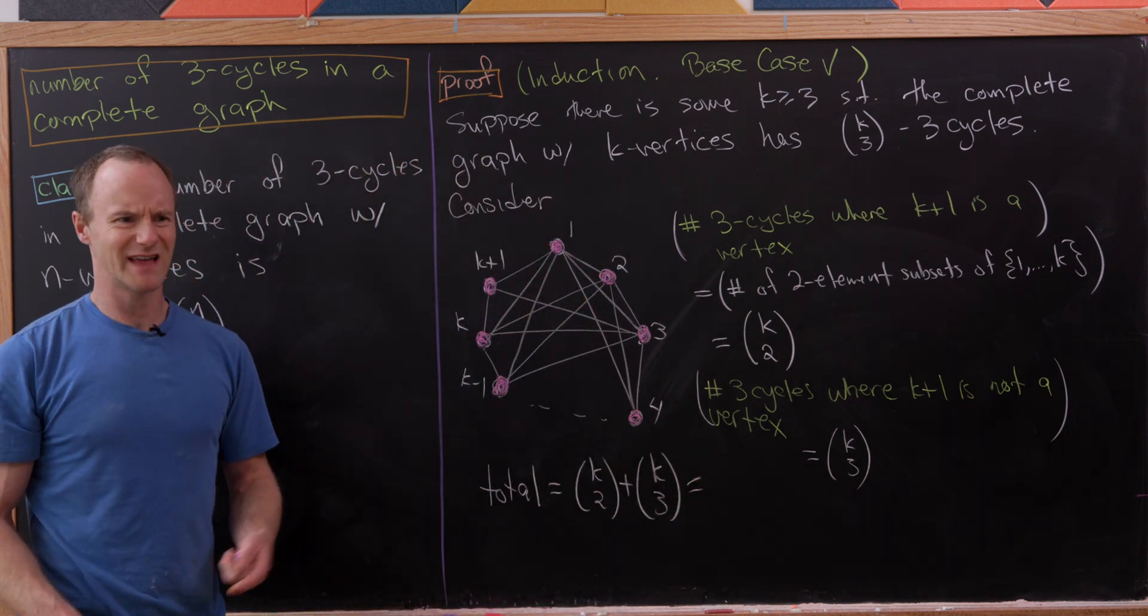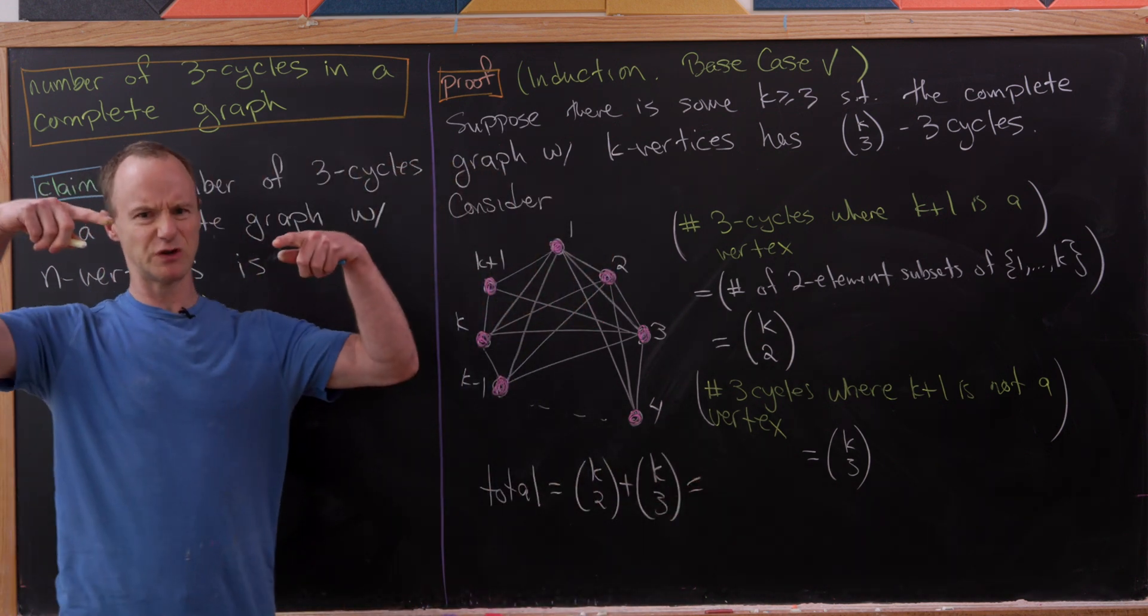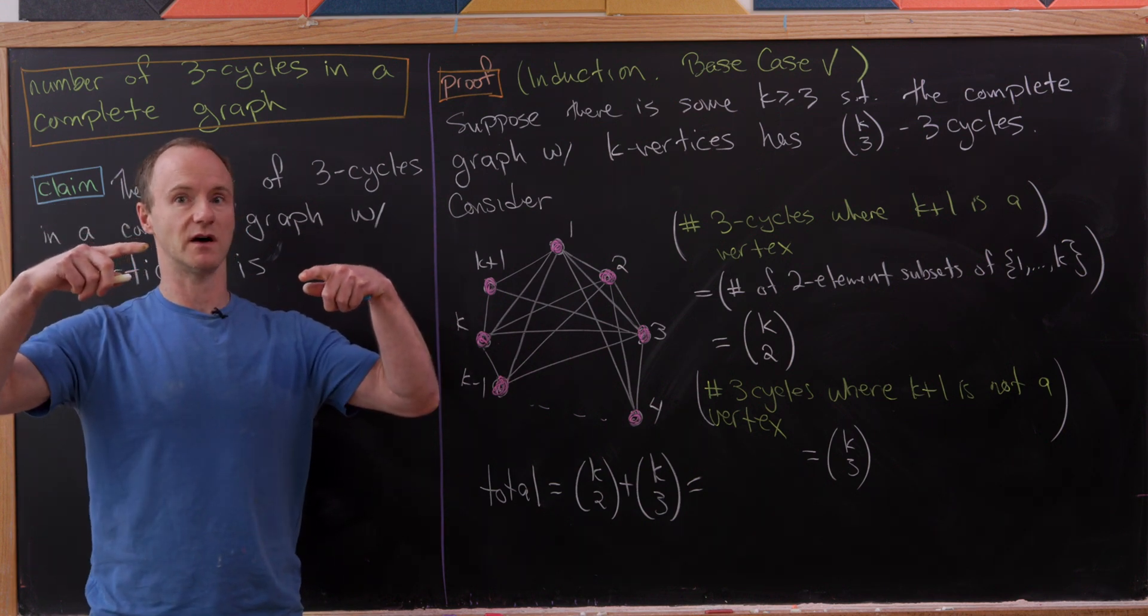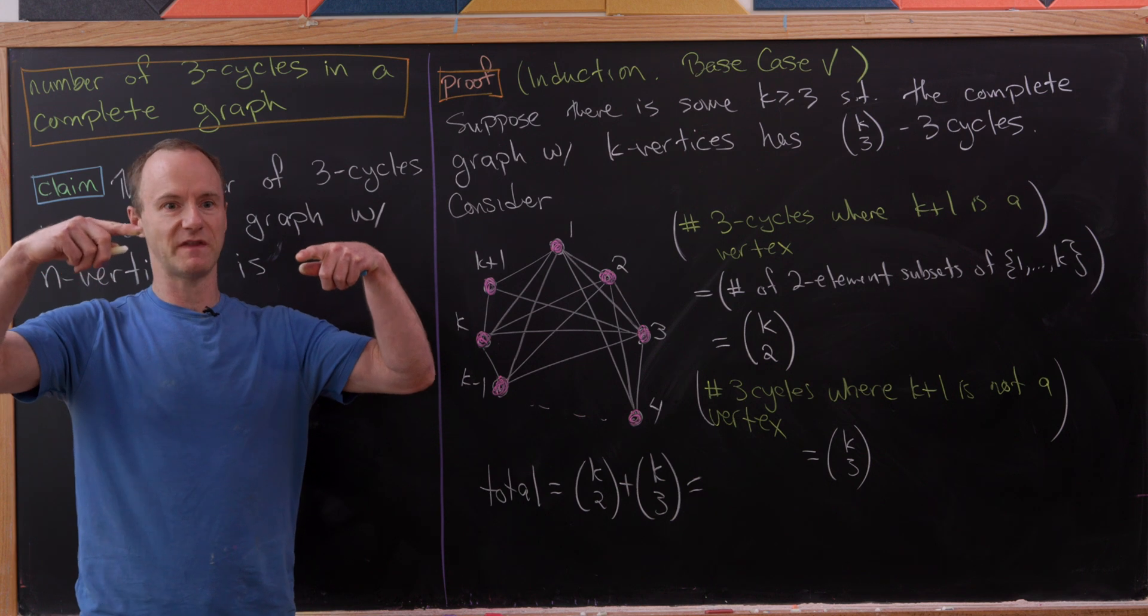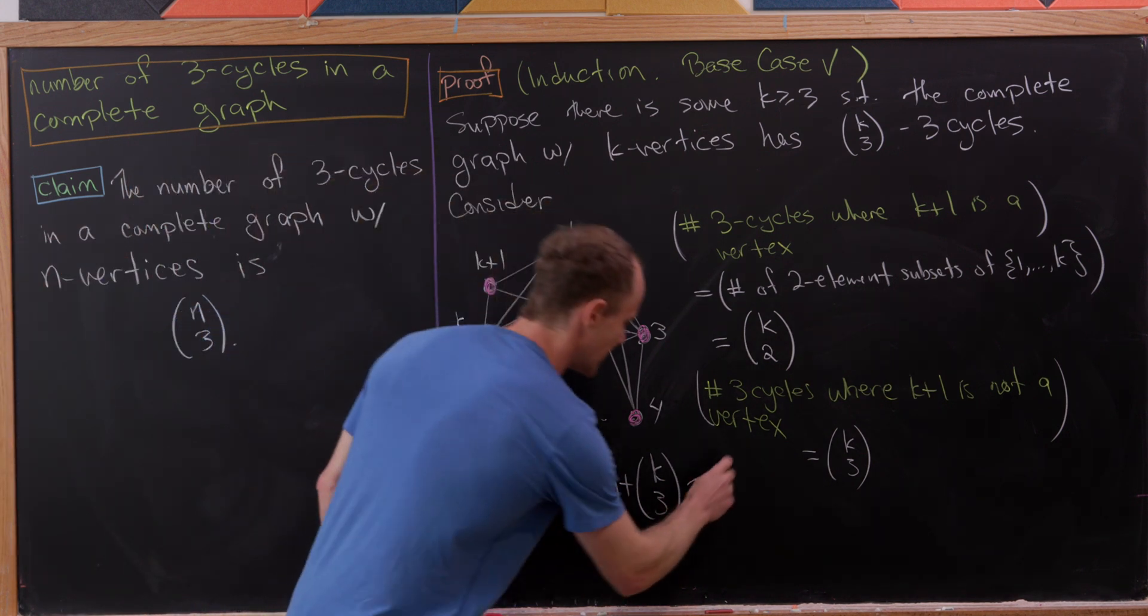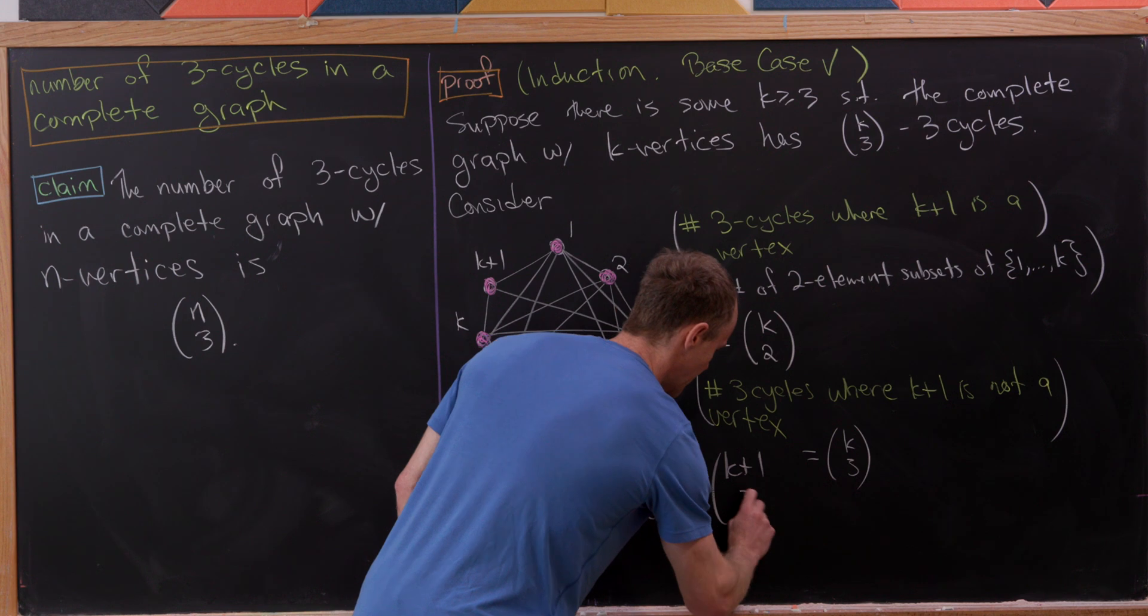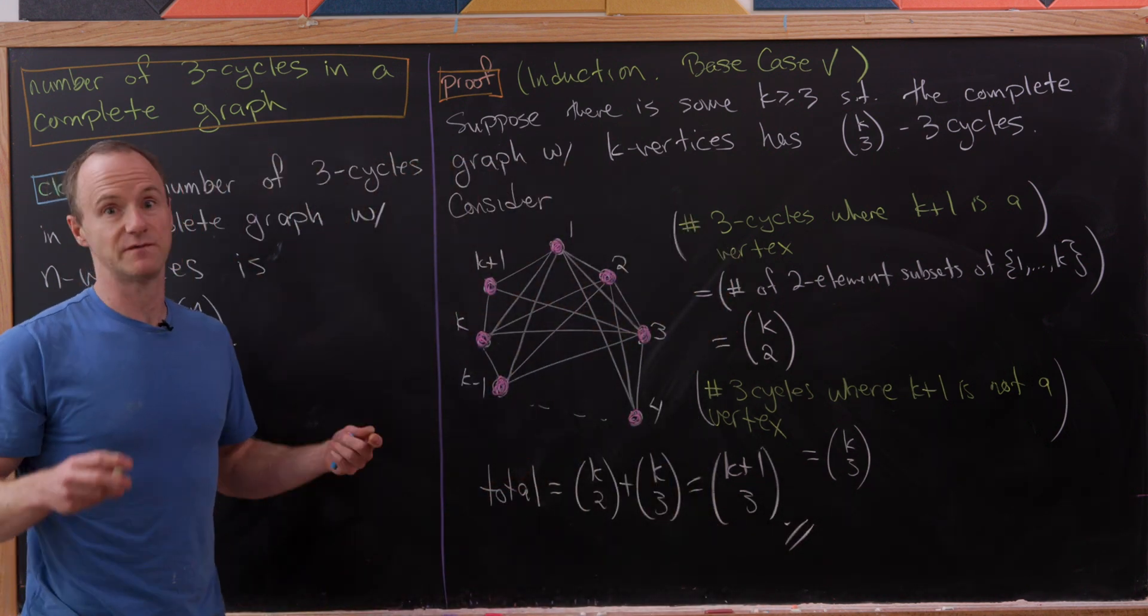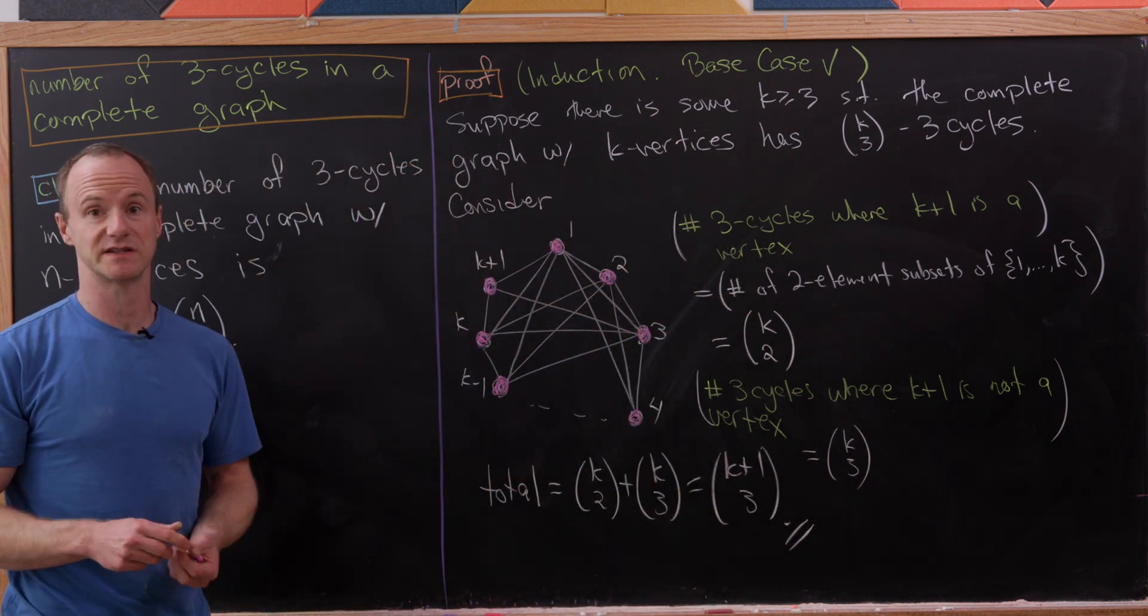But that's exactly like adding two entries on the same row right next to each other in Pascal's triangle. That descends to the next level, giving you the entry k+1 choose 3. That's exactly where we needed to end up to finish this proof, and that's a good place to stop.